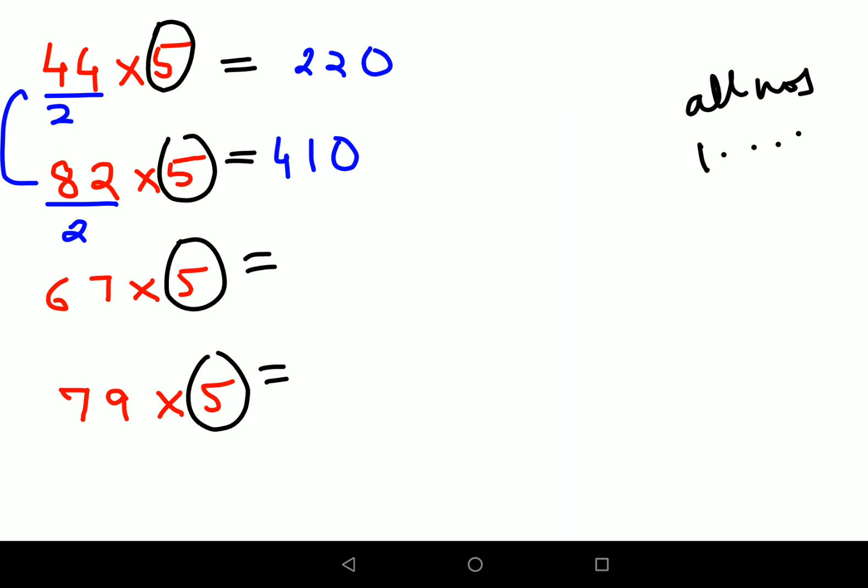Now for the next one, obviously you might be wondering what happens for odd numbers. So here what you do is you subtract 1. So you get 66. 66 divide by 2 is 33. Now instead of 0 you will add a 5. You will put a 5. Similarly 79 minus 1 gets you 78. So when you divide that by 2 you will get 39 and then you put a 5. So 78 divided by 2 is 39 and then you put a 5 ahead to get your answer.